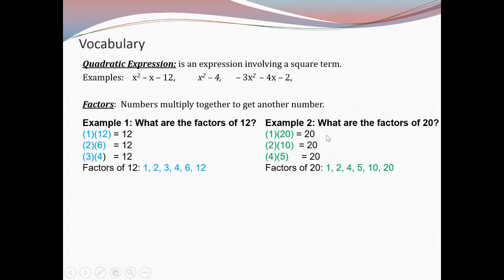Example two: what are the factors of 20? How can we get 20? 1×20, 2×10, 4×5. So the factors of 20 are 1, 2, 4, 5, 10, and 20. It's always wise to get all the possible combinations, because when you're factoring, maybe the one you forgot is the one that's going to be the solution or part of the answer.